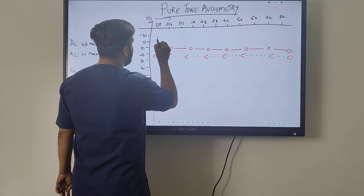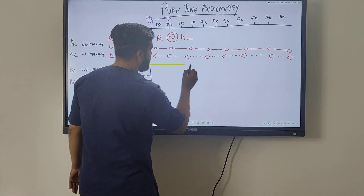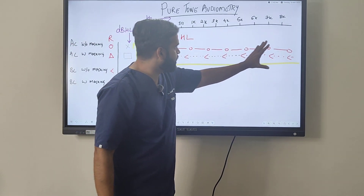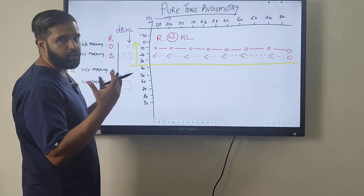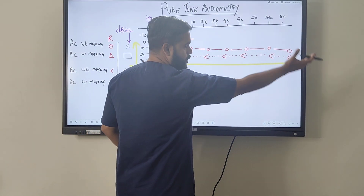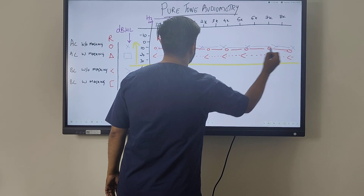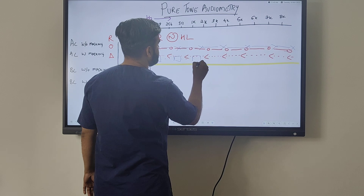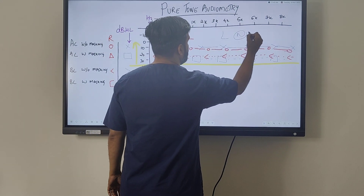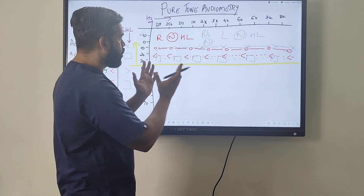This is a right-side normal hearing level. Normal hearing is anything above the 25 to 30 decibel area. The air bone gap is also normal, so this is considered a normal hearing test for the right side. For the left side, people either make a new graph or use a blue line — X means without masking, and a box means with masking — to show that bilateral hearing is also normal.